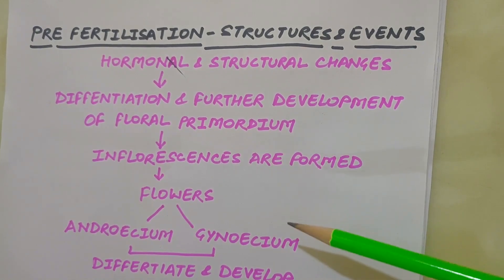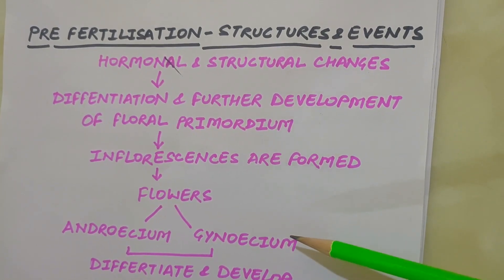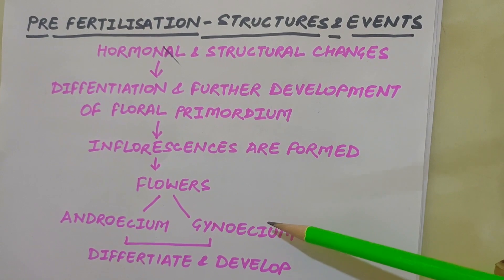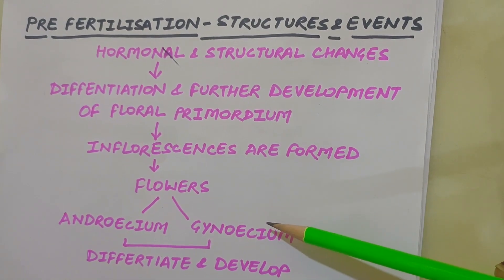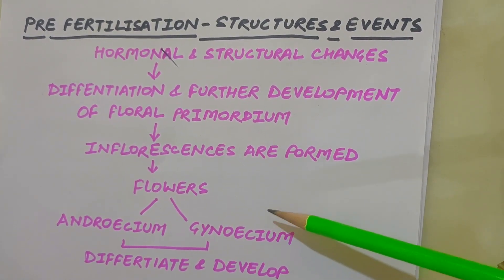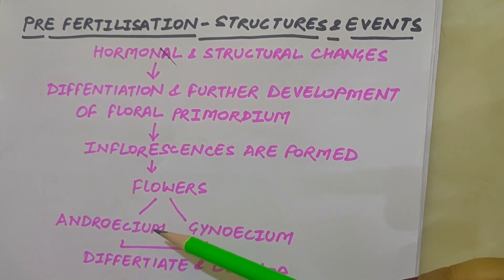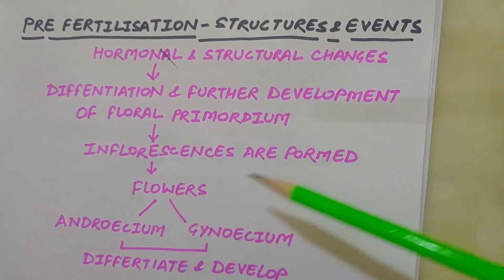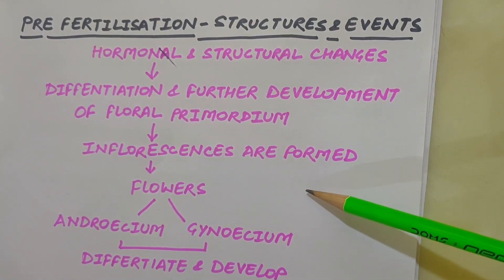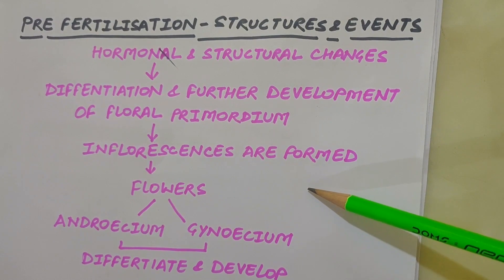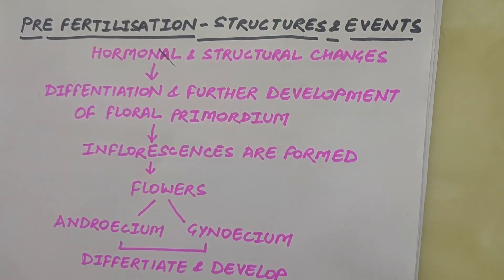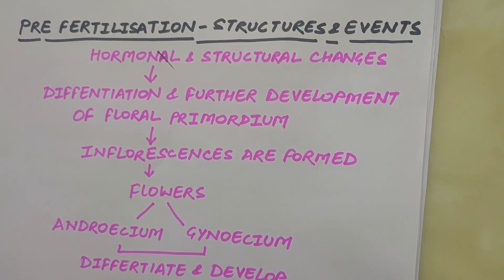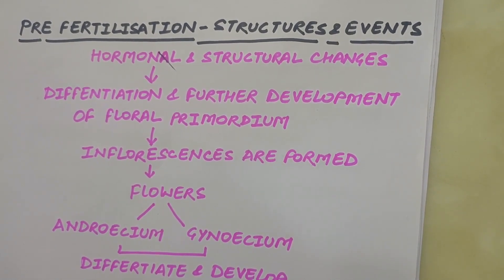In the flower, the male and female reproductive structures, that is androecium and gynoecium, differentiate and develop. Androecium consists of a group of stamens that represent the male reproductive organ, and gynoecium represents the female reproductive organ. Androecium is the collective term used for all the stamens present in the flower, and gynoecium is the collective term for carpels of a flower.